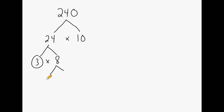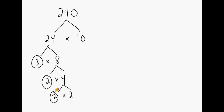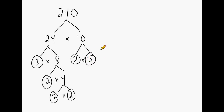8 can be broken down further into 2 times 4. 2 is a prime number so we can circle that. 4 is composite, so we can break that down into 2 times 2. Now we have to go back up to the composite number 10 and break that down. 2 times 5 produces 10, and 2 and 5 are both prime numbers, so we have reached the end of our factor tree. We're going to list the numbers in order from smallest to greatest — we have four 2's, a single 3, and a single 5.